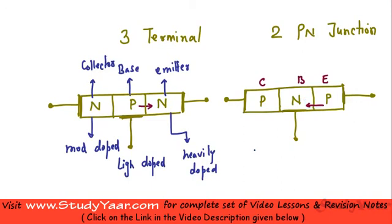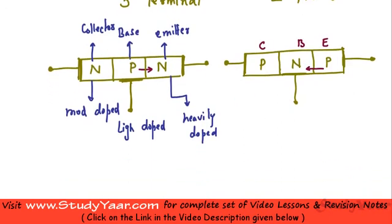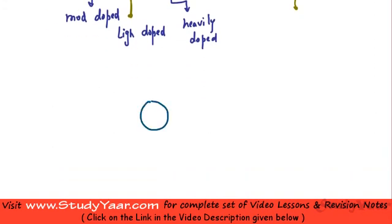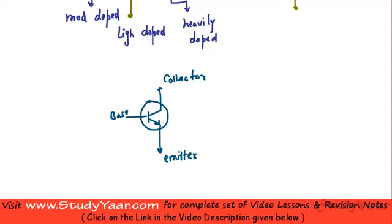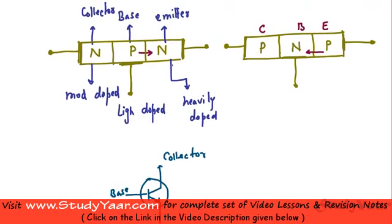On the basis of the direction of current — which is like this in NPN and like this in PNP — you have different symbols for a NPN and a PNP transistor. Your NPN transistor is represented like this: this represents your base, this represents your collector, and over here this represents your emitter. You can see that your current is going from base towards emitter, which is the case in the NPN transistor.